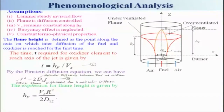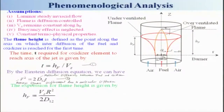From this expression, HF depends on Vz — if axial velocity is higher, flame height is higher. It also depends on the radius: a larger diameter gives a larger flame. And if diffusivity D₁₂ is higher, HF will be smaller.